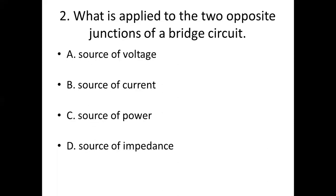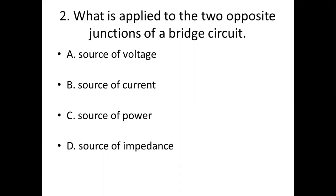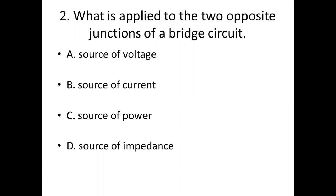Second bit. What is applied to the two opposite junctions of a bridge circuit? Option A: source of voltage. Option B: source of current. Option C: source of power. Option D: source of impedance. Answer: Option B, source of current.